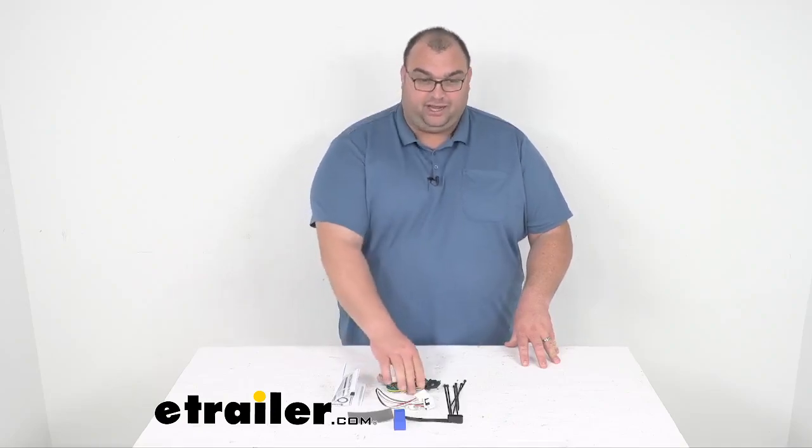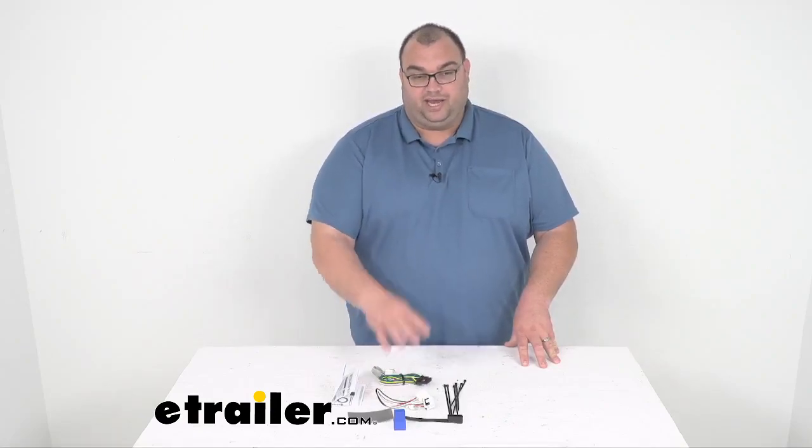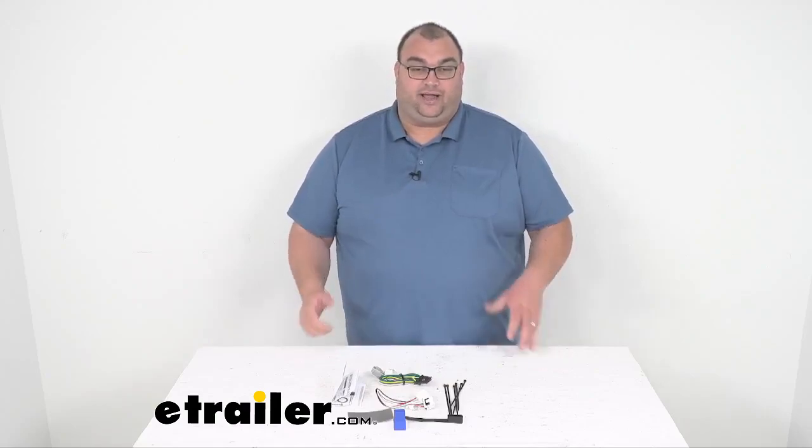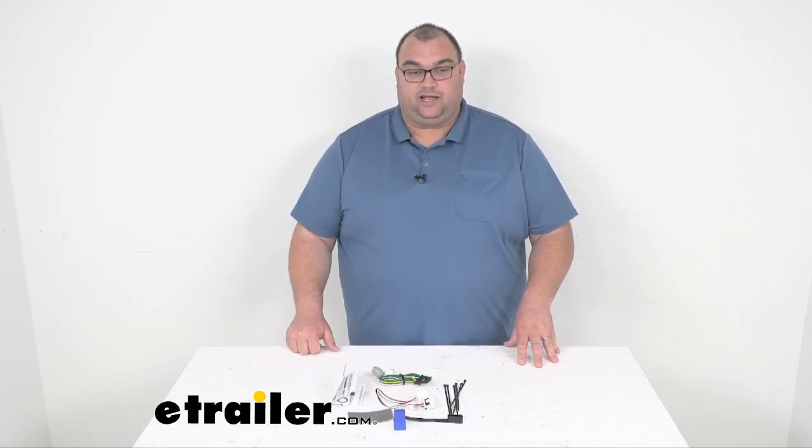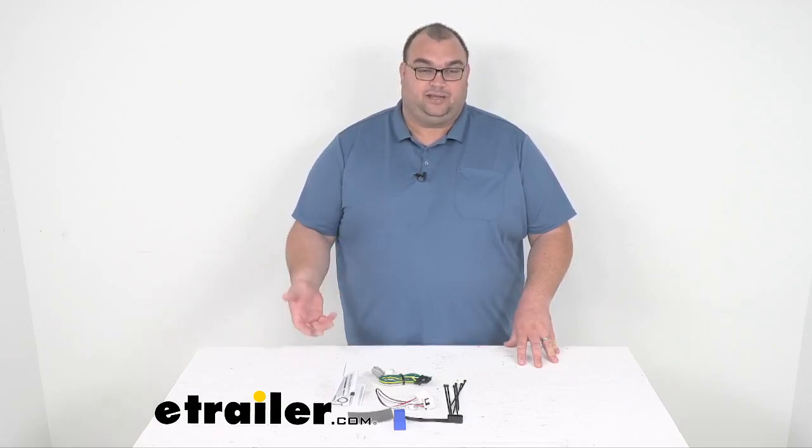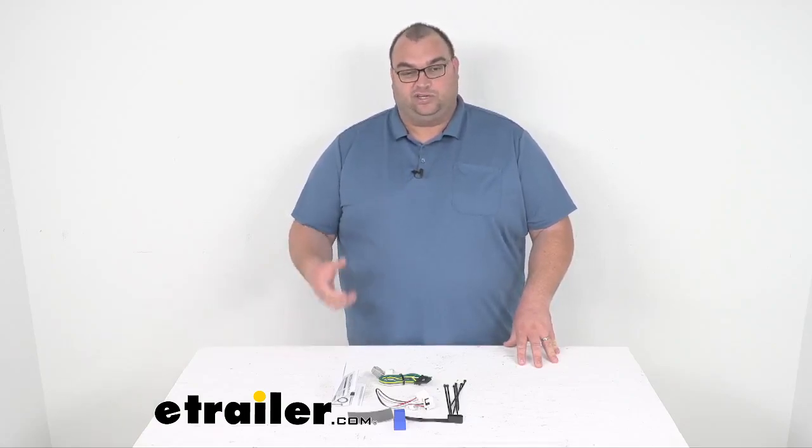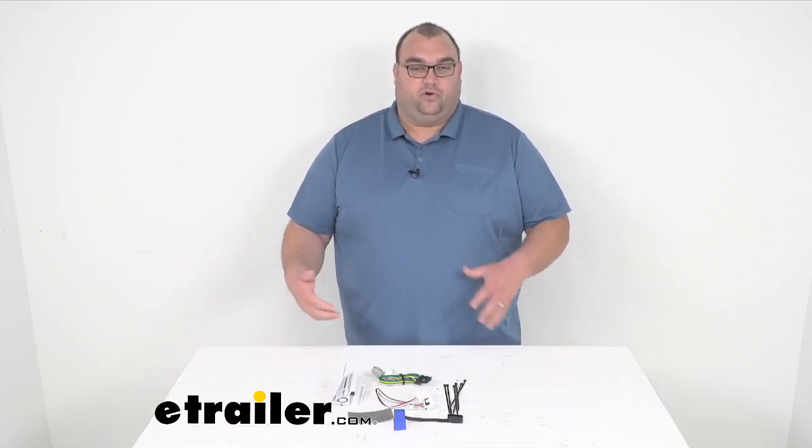Once the installation is complete, the four-way connector here will be stowed beneath your vehicle near your trailer hitch. So I recommend getting a mounting bracket. Those are sold separately. You can find them on etrailer.com, and that will help keep that connector up out of the way or tight against the hitch so you never have to worry about losing it.